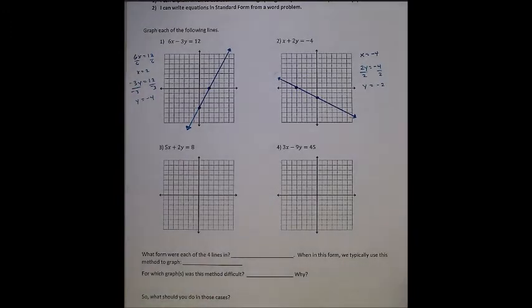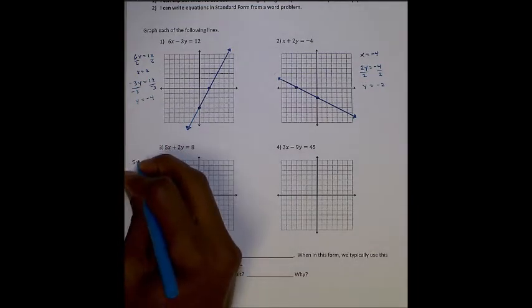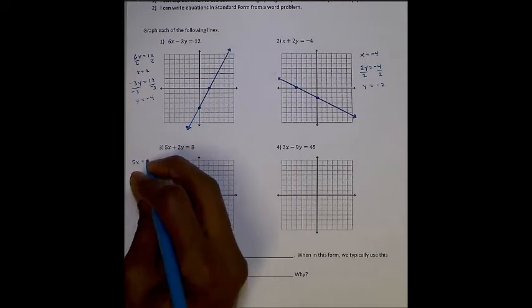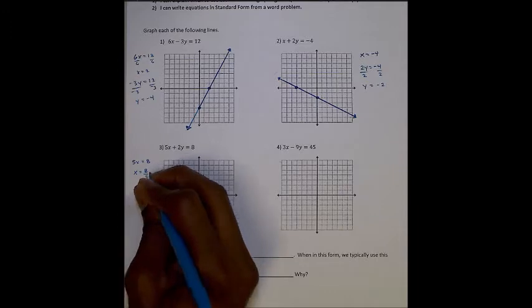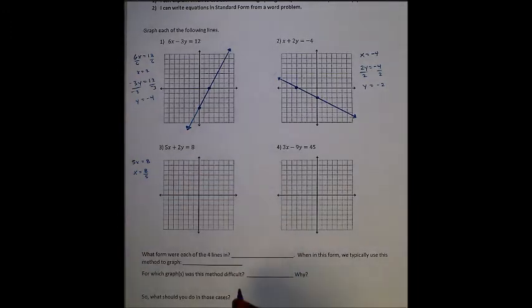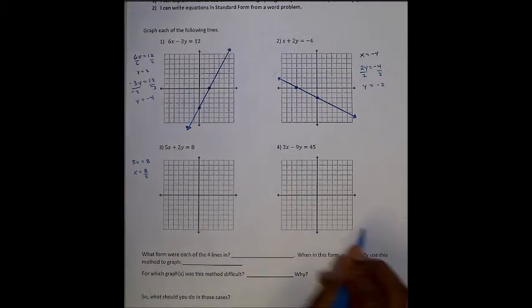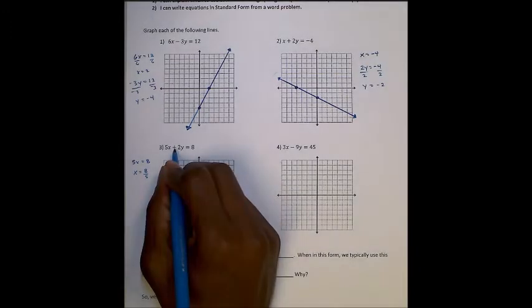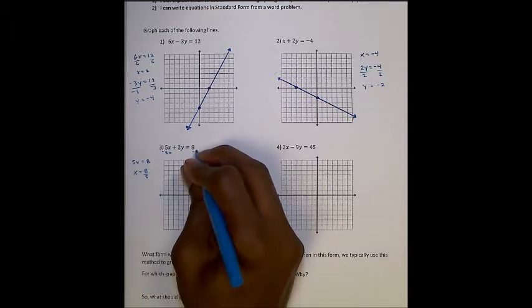Number three, we have 5x plus 2y equals 8. I'll cover up y. I have 5x equals 8, and I can see a problem happening. Because as I solve this, I'm going to get x equals 8 fifths. And I know that there's not really a way that I can graph 8 fifths very nice. So I'm not going to graph it in this way.